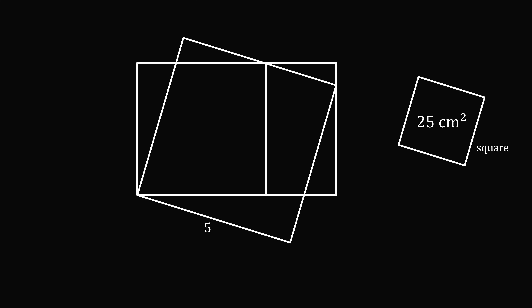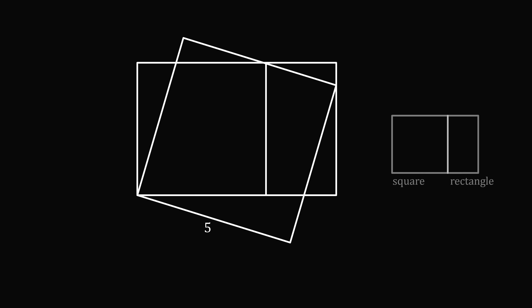Now let's solve Problem 2. The tilted square has an area of 25 square centimeters, so its side length equals the square root of 25, which is 5. We want to calculate the combined areas of the square and the rectangle. Suppose the upright square has side length x and the rectangle has width y. The combined area of the two shapes equals the area of a rectangle with sides x and (x + y), so that's x multiplied by (x + y). If we can find x times (x + y), we'll have our answer.